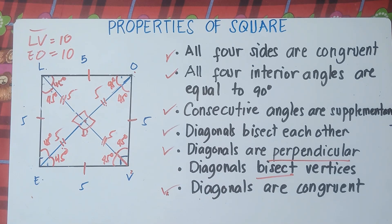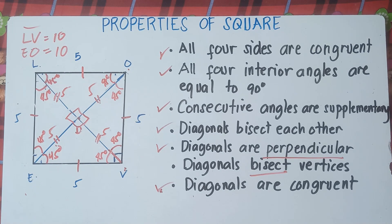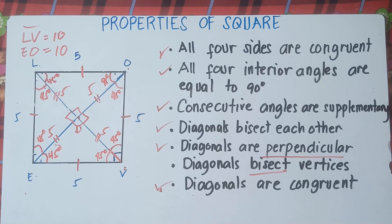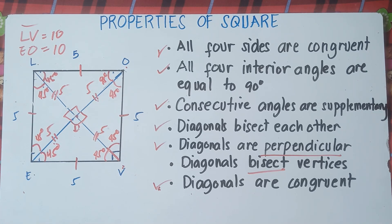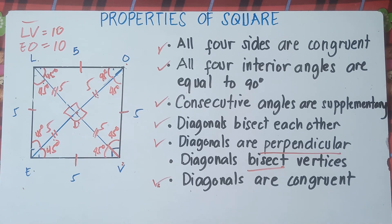So that's the properties of a square — the things you need to remember. Our next video will be solving for a square, finding all sides and all angles. I'll put the link in the description below. I hope you learned something new about the properties of a square. Have a great day, goodbye for now!